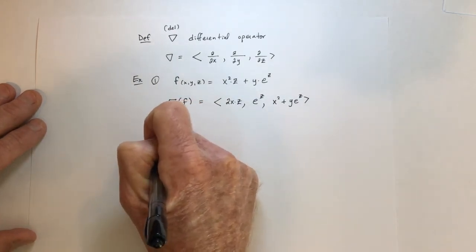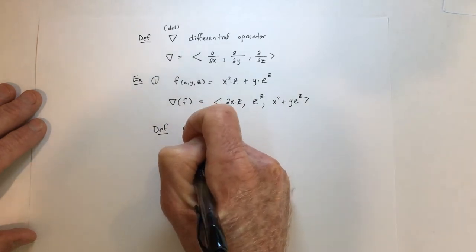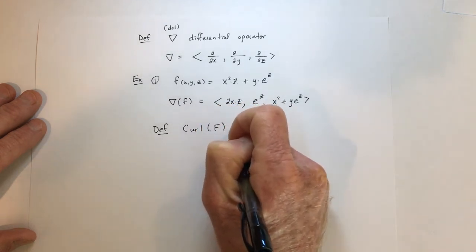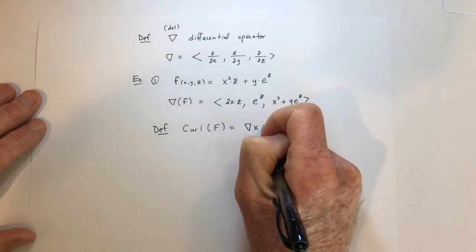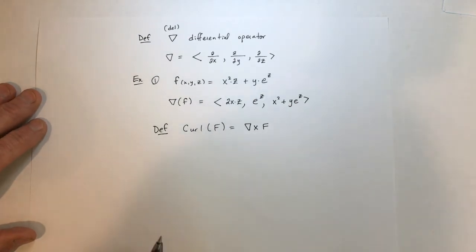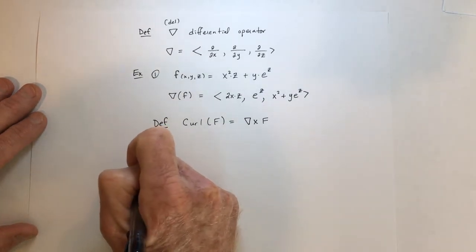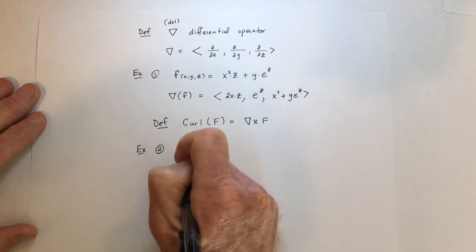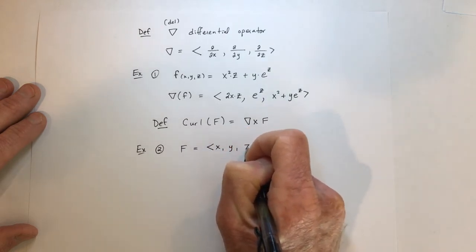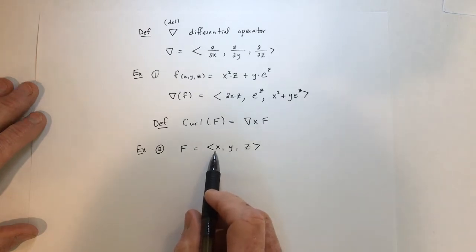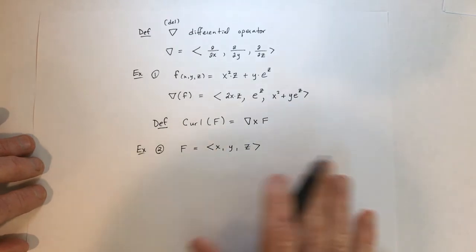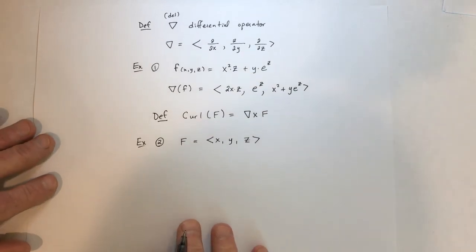You can redefine the curl in a different way: the curl of a vector-valued function F is del cross F. For example number two, here's a very simple function — there's absolutely no curl to it. It has no x², no sine, nothing like that — just straight components. So find the curl of F. It's going to be a cross product, so we set up the determinant with i, j, k on top, del in the middle row, and F in the last row.